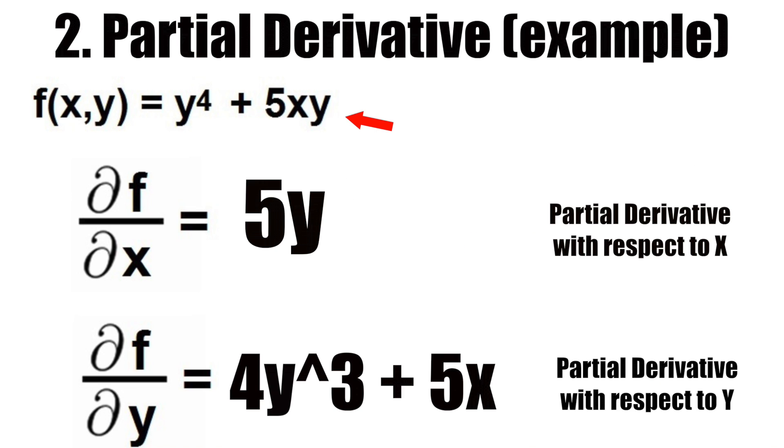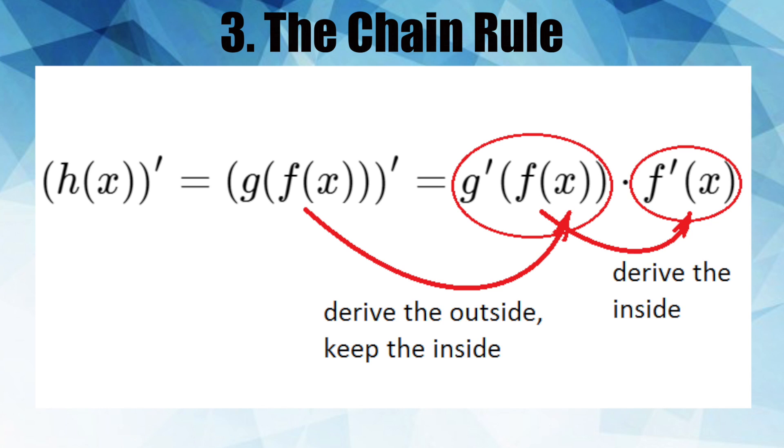A partial derivative of a function of several variables is its derivative with respect to one of those variables with the others held constant. And the chain rule is the process we can use to compute derivatives of composite functions. A composite function is a function of other functions. That is we might have one function that is composed of multiple inner or nested functions.